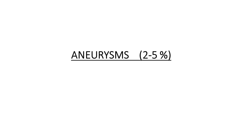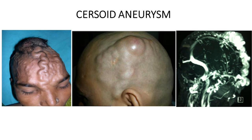Aneurysm is localized dilatation of an arterial segment, with an incidence of 2% to 5% of the general population. Aneurysms may occur in any part of the body, including the supraorbital, supratrochlear, and superficial temporal arteries.